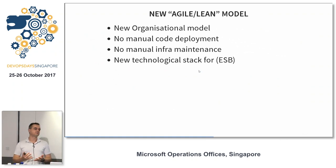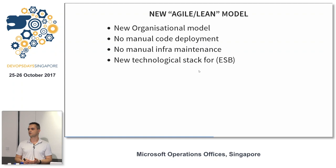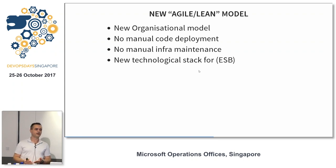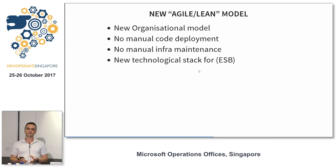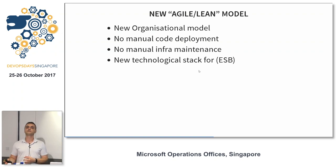We had a pretty difficult problem to solve, so we focused on a few things. We needed a new organizational model — we couldn't implement any automation if the underlying organization wasn't strong enough to support it. We decided on no manual code deployment from development up to production, no manual infrastructure maintenance — everything would be monitored and automated. Because this is a vendor-driven application, not in-house development, we're usually two to three years behind on newer versions and patches — deployments of a new version can take six to ten months. We decided to look for a new technology stack for the enterprise service bus.